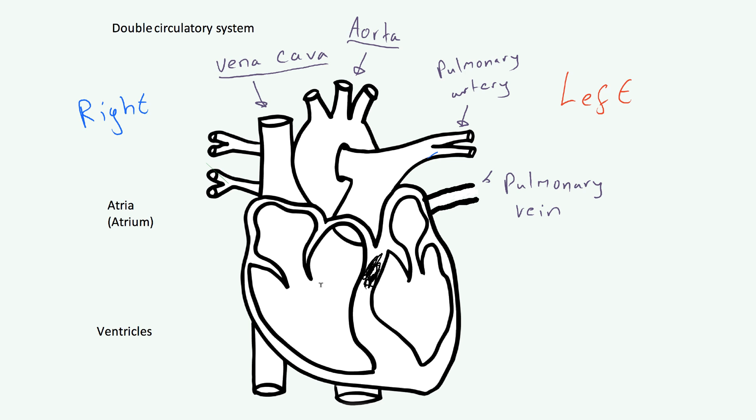Sometimes those cells are damaged and the heart can't regulate its own beating — that's where you need an artificial pacemaker. An artificial pacemaker is a device that sends electrical impulses to the heart. It's applied on or under your skin with wires going to the heart, and it sends electrical impulses to cause the heart to beat as if those cells were not damaged.